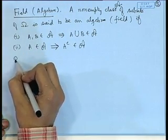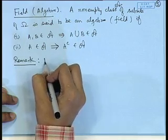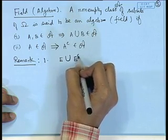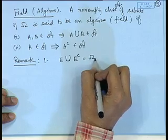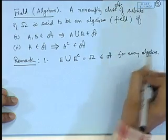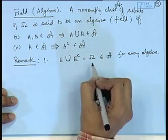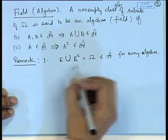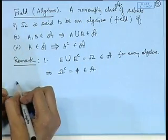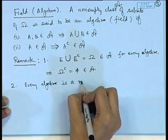Let us look at the consequences of this definition. For any set E in the algebra, its complement will be there, and therefore E union E complement will be there — this is the full set omega, so omega belongs to the algebra. Taking omega complement equals phi, phi also belongs to an algebra. A ring always contained the empty set; now the full set is always included in an algebra. Our second remark is that every algebra is a ring.